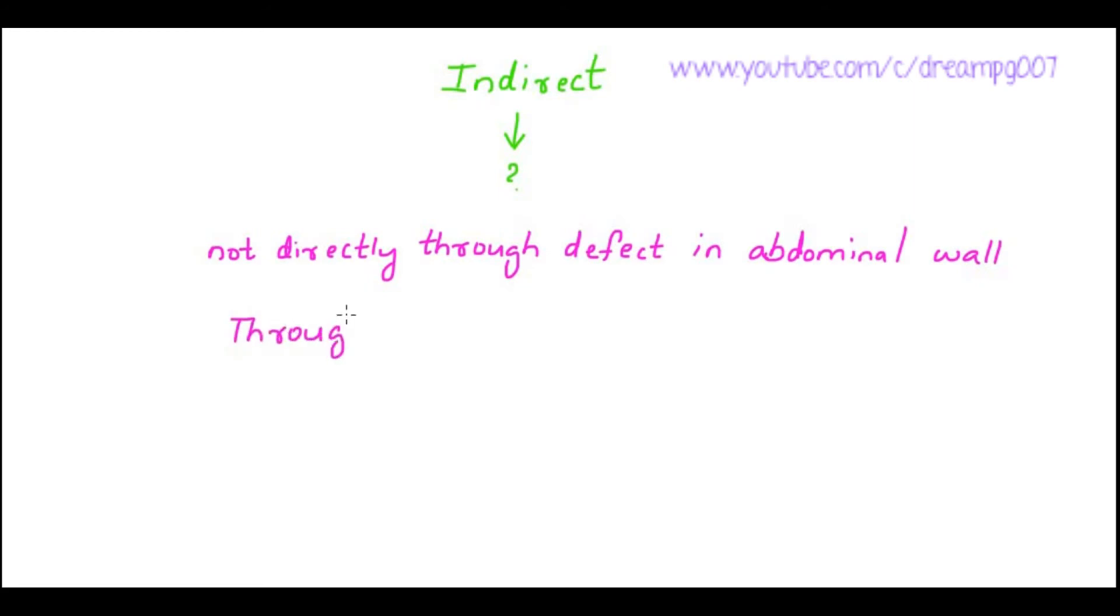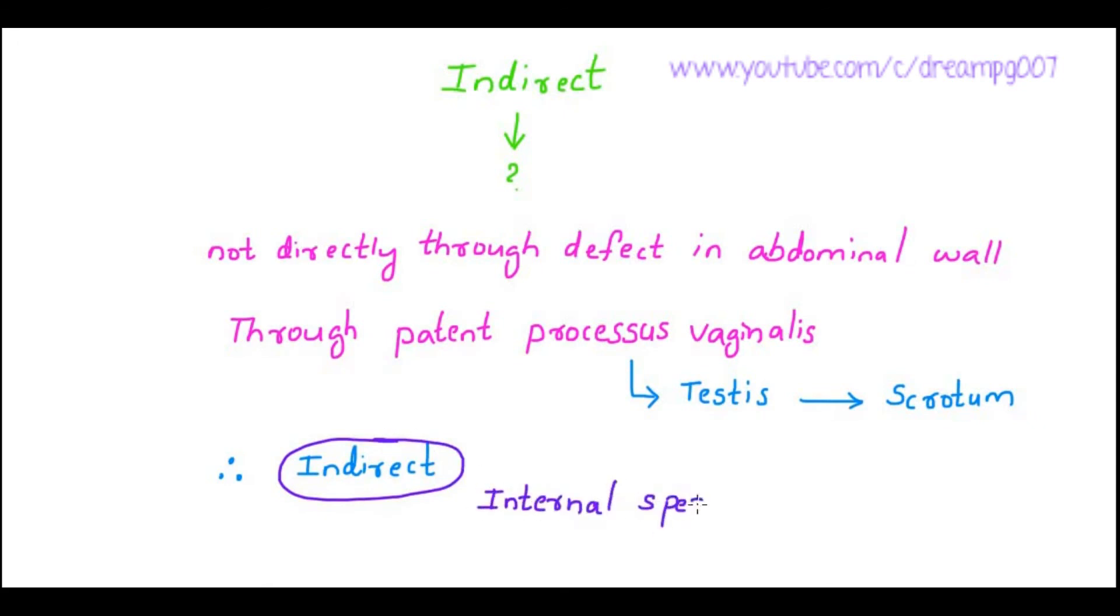Processus vaginalis is a canal through which the testis which is developed inside the abdomen reaches the scrotum. So in some patients this canal does not close, and in adult life through this canal the abdominal content herniates, and that is why it is called as indirect hernia. As this hernia comes through this patent processus vaginalis, it is covered by the internal spermatic fascia.